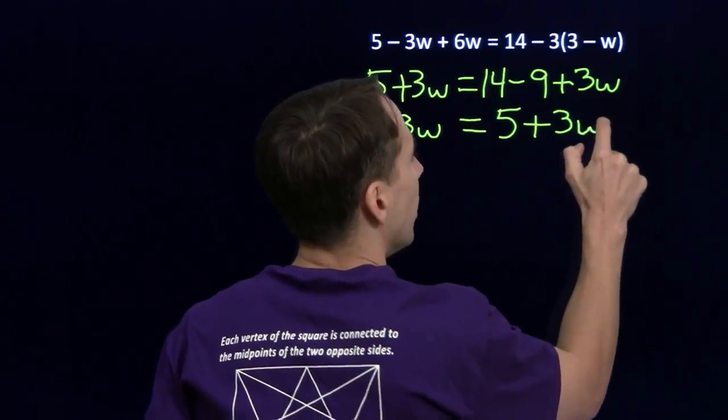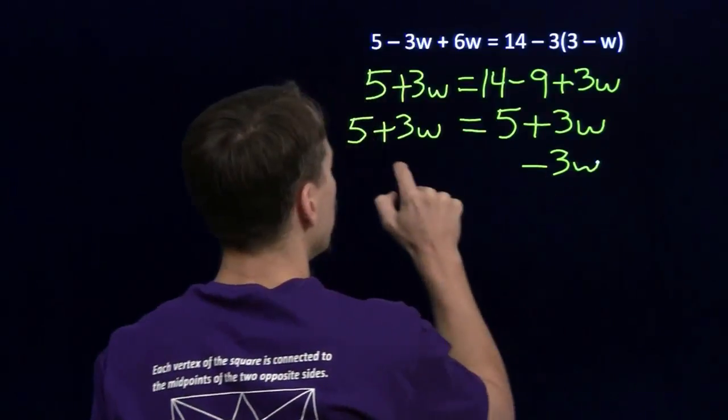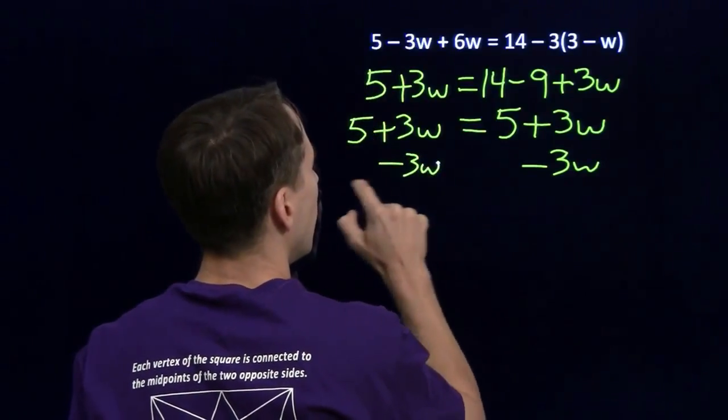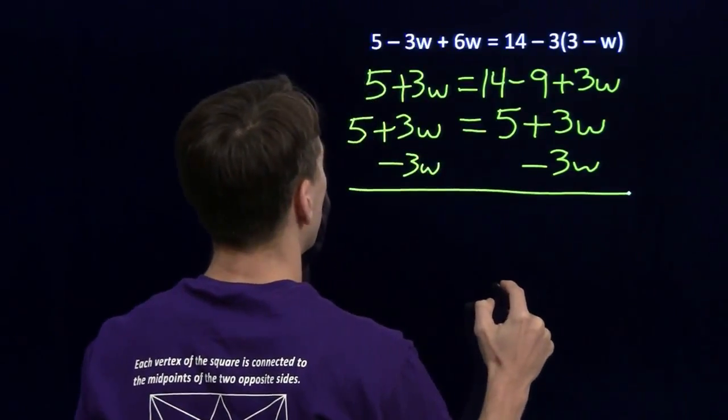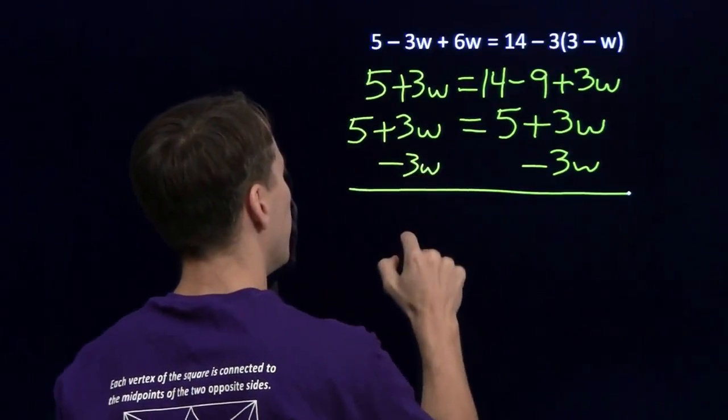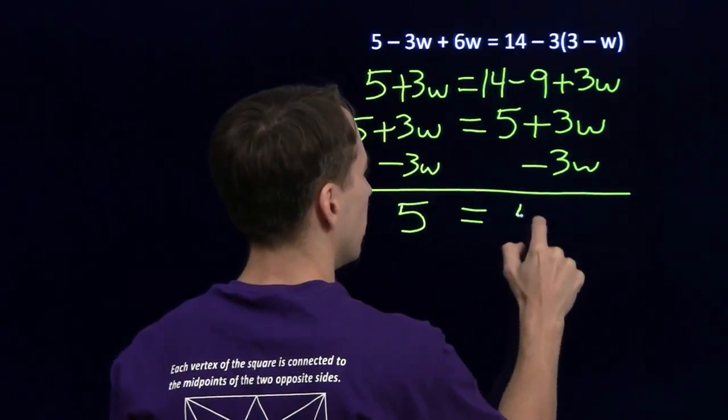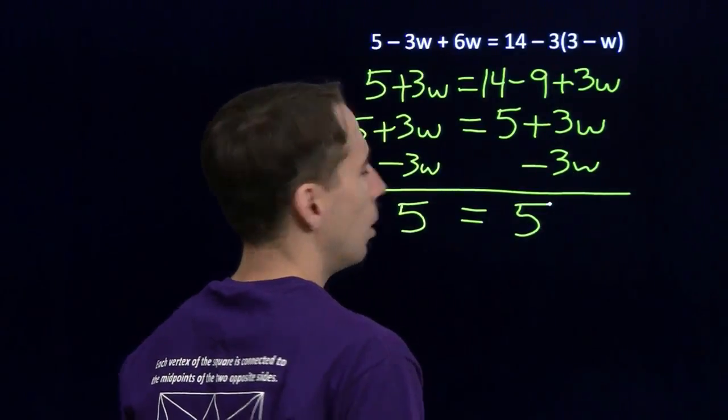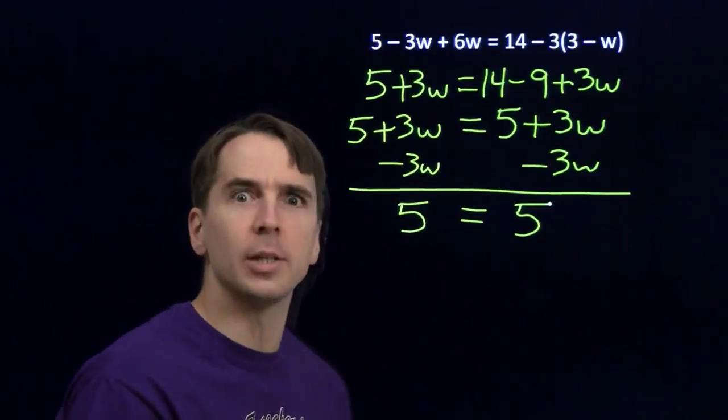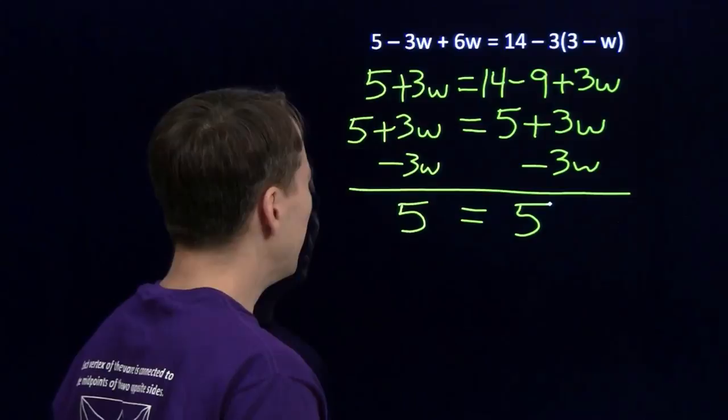And we're going to want to subtract the 3w from both sides to get all the w's together. And then we... oh, it happened again. 3w minus 3w, the w's go away. 3w minus 3w, the w's go away. 5 equals 5. Well, at least 5 does equal 5. At least we get an equation that's actually true this time. But what does it mean?